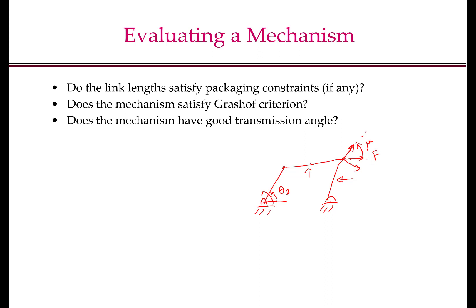Let's remind ourselves why the transmission angle is important. F is the force that acts along the coupler, so the force normal to the output link is F sin(mu), and if L4 is the length of this link, then the magnitude of the moment acting on link 4 is F sin(mu) times L4. As the transmission angle mu tends to zero, the moment acting on the output link tends to zero, and if this moment becomes small, the mechanism gets locked due to friction.